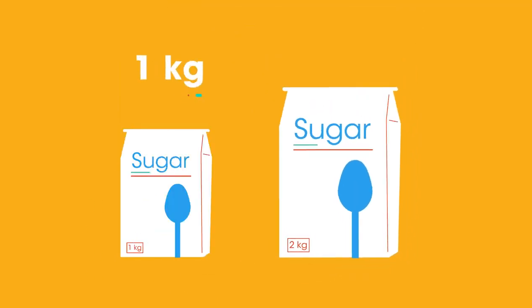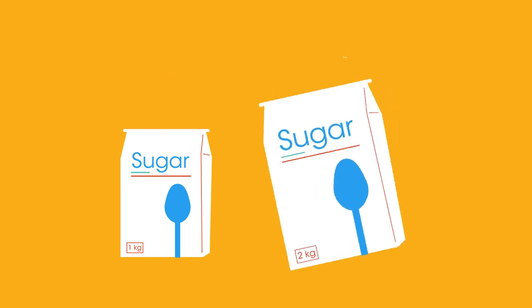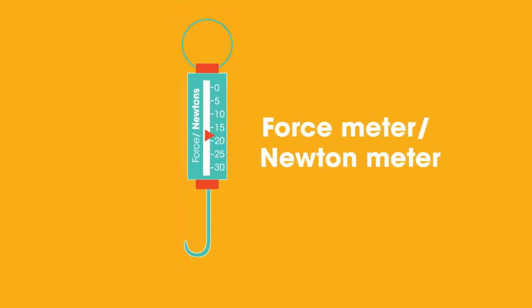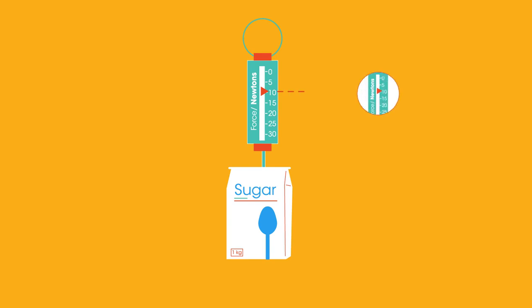It would be wrong to say the bag weighed one kilogram or two kilograms, as weight is a force caused by gravity. To measure the weight, we need a spring balance or force meter. This is a force meter or a newton meter. It shows the weight of something hung from it. Let's add the bag of sugar. It shows the weight is almost 10 newtons.